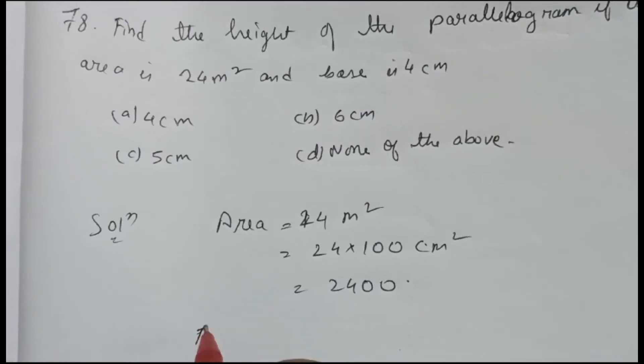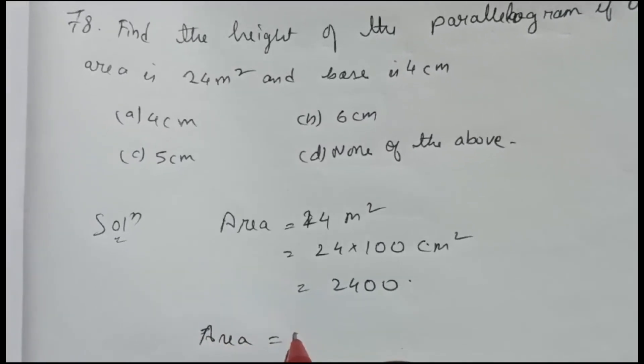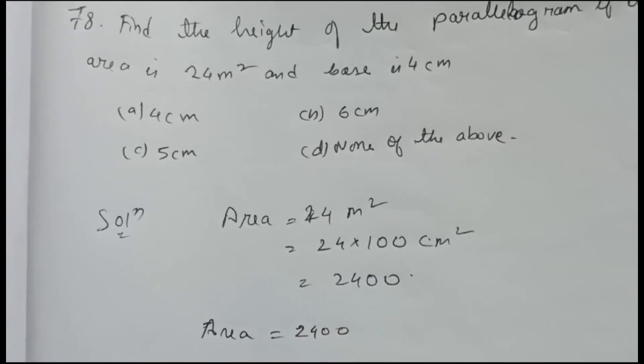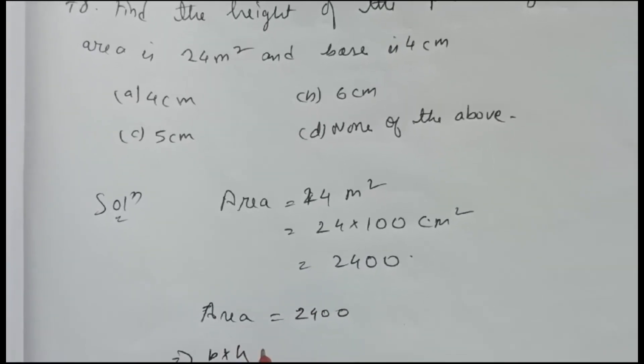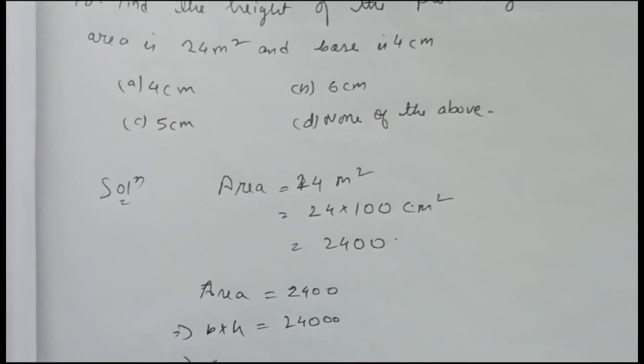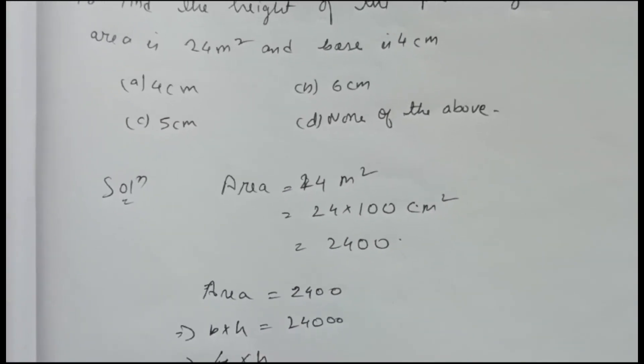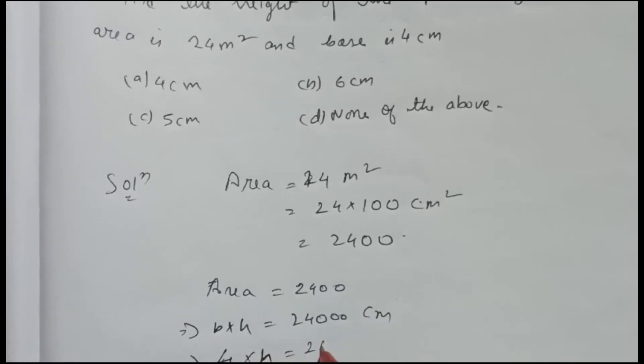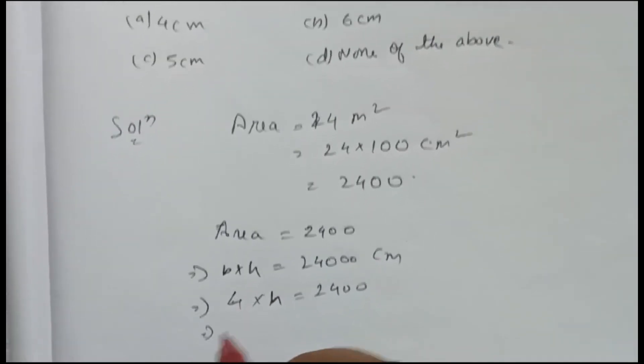Formula is b into h equals 2400. So we know base given here, 4 into h will be centimeter, 2400. Then h will be 2400 centimeter divided by 4.